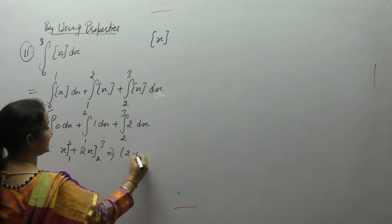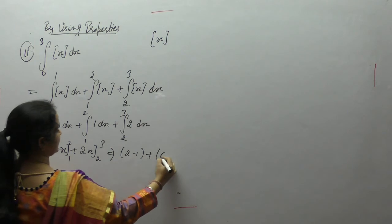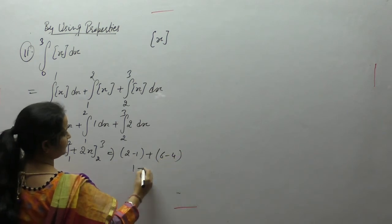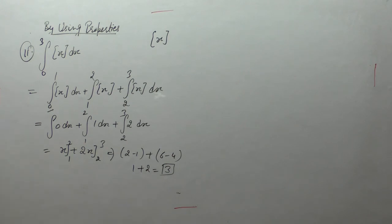Computing: 2 minus 1 plus 2 times 3 equals 6 minus 2 times 2 equals 4. The answer is 3.